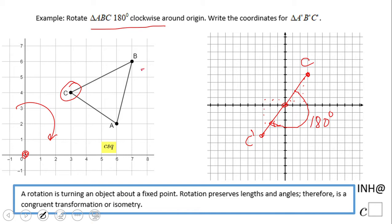So let's try to get a rule. C was 3 and 4. C prime is negative 3 and negative 4. So x, y becomes negative x, negative y. Now we can do the others.